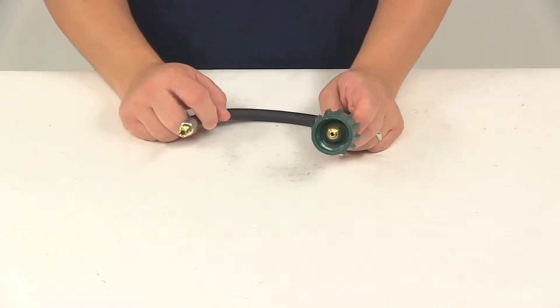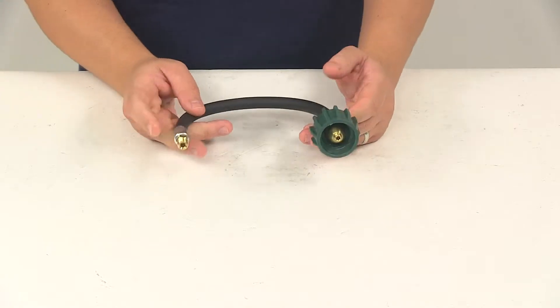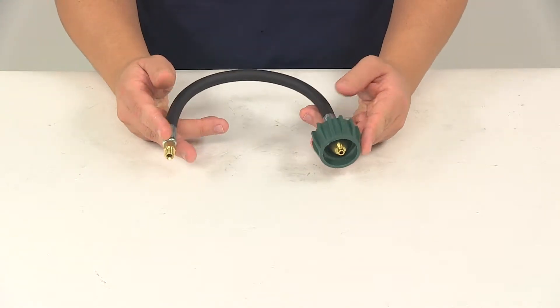Today we're going to be taking a look at the MB Sturgis Propane Pigtail Hose. This is used to connect a dual LP cylinder system to a two-stage regulator.